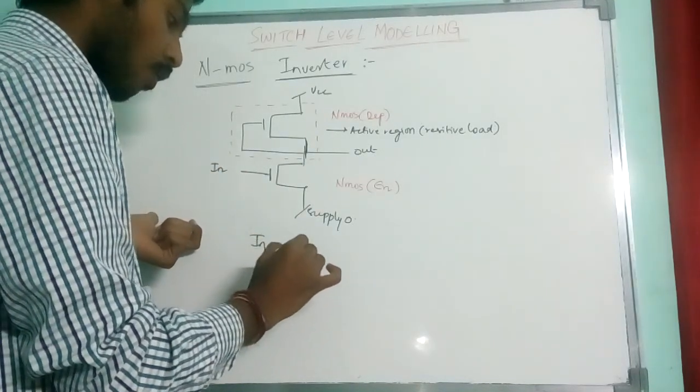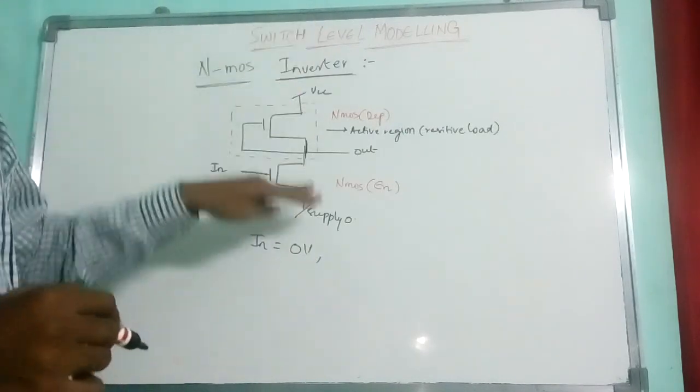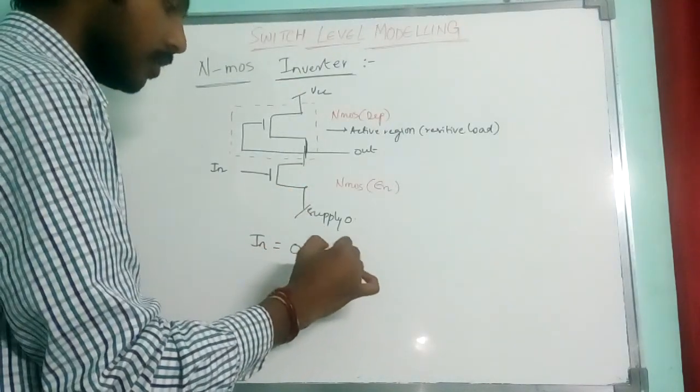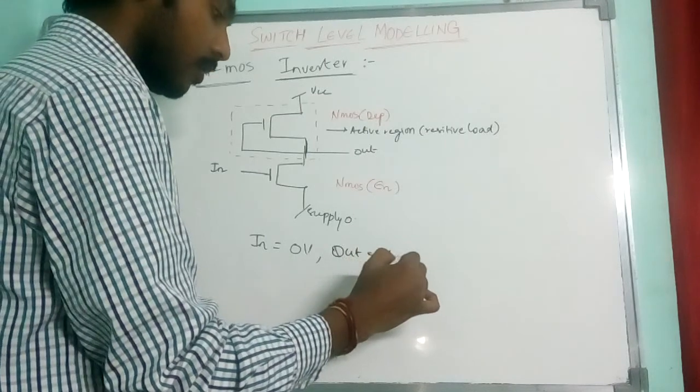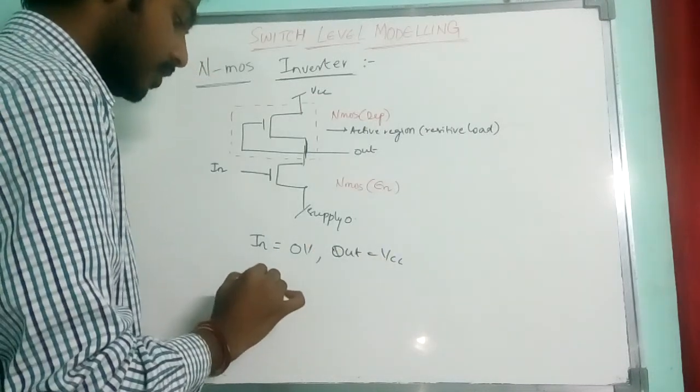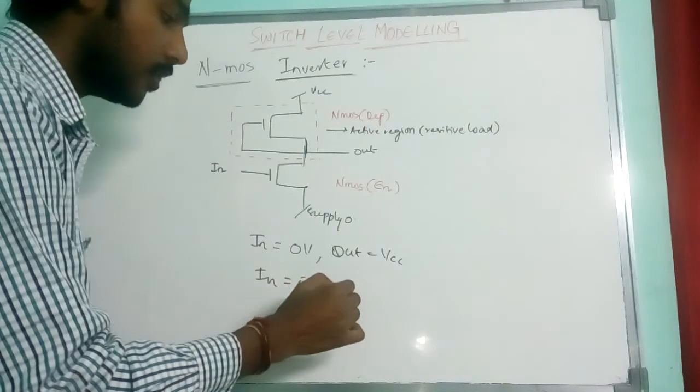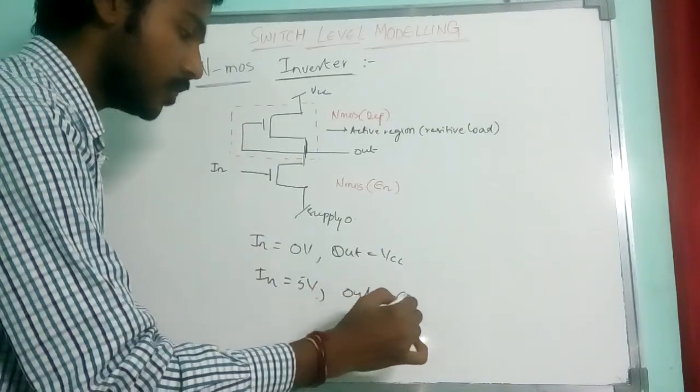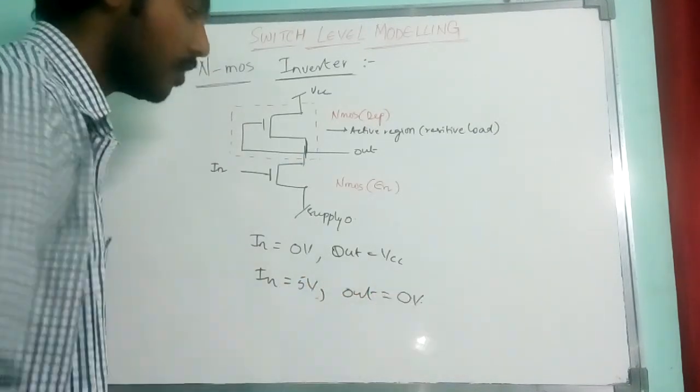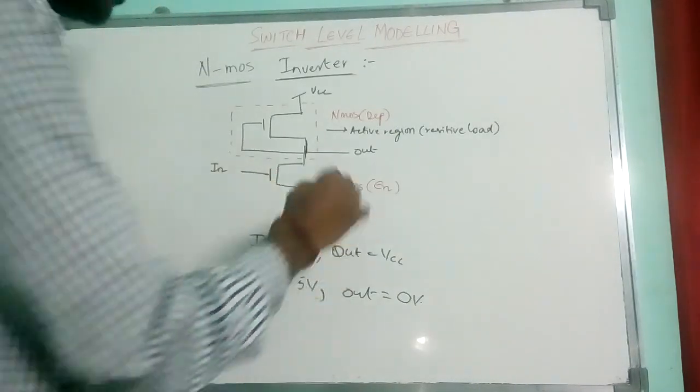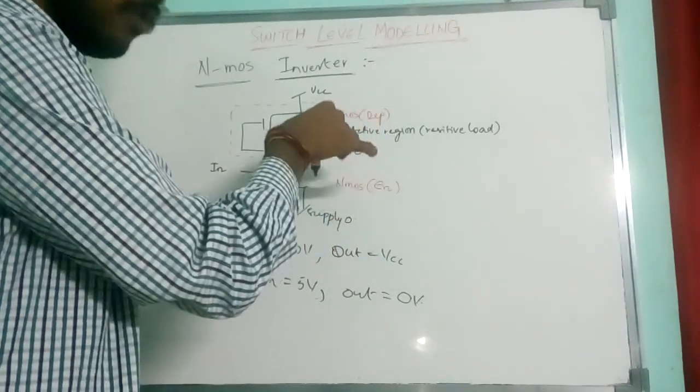Whenever the input is 0, this transistor will be off and the VCC will be the output. Whenever this is 5 volt logic high, the output will be 0. So when it's 5 volt, this transistor is strong and the supply will be pulled down, output will be 0.